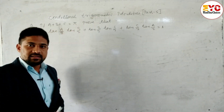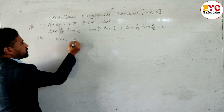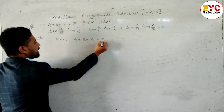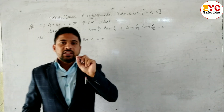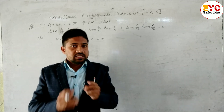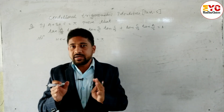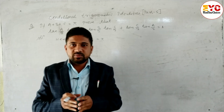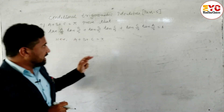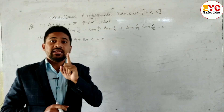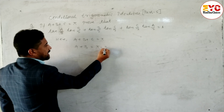Let's start the solution. We have the condition a plus b plus c is equal to pi. When the expression is in the form of tan and cot, no need to take LHS or RHS — just take the condition. If the expression has tan, multiply both sides by tan; if cot, multiply by cot. Here the expression has tan, so we take tan both sides. So a plus b is equal to pi minus c.